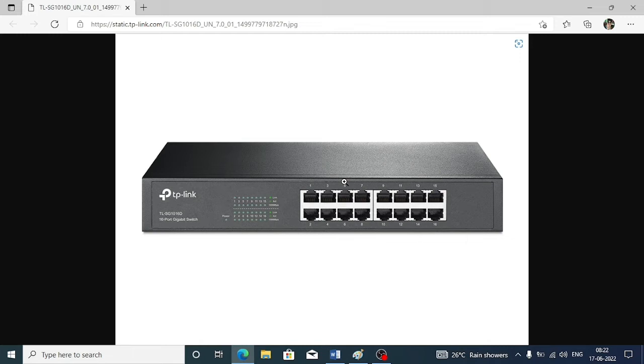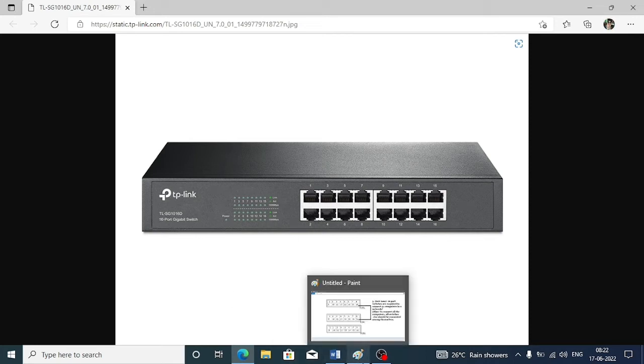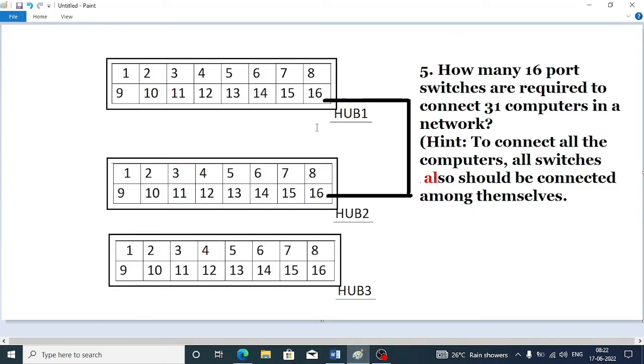The switches also have to be connected within themselves so that all are connected together. Suppose this is switch 1. From switch 1, I am connecting port 16 to switch 2 port 16. That means two ports are already blocked.